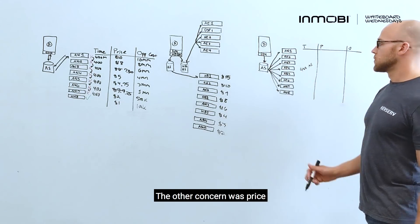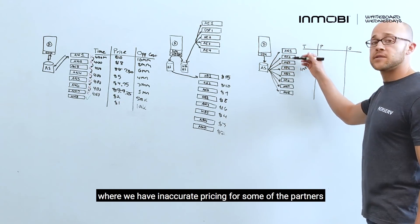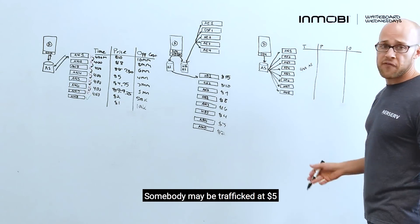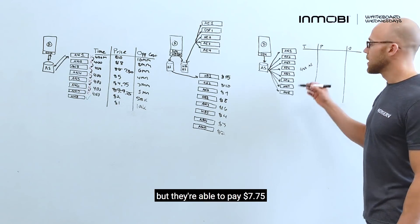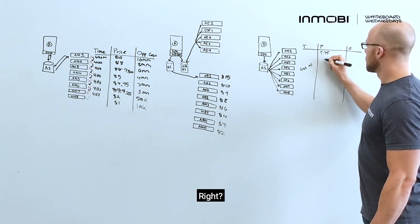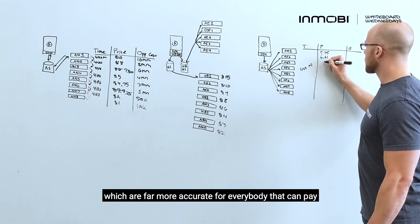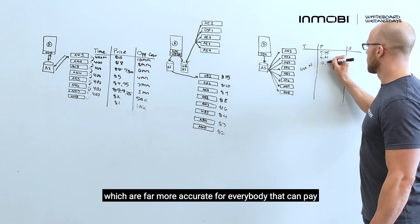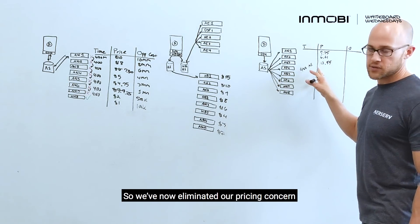The other concern was price, where we have inaccurate pricing for some of the partners. Somebody may be trafficked at $5, but they're able to pay $7.75. Now, I'm able to return bids for each of these partners, which are far more accurate for everybody that can pay. So, we've now eliminated our pricing concern.